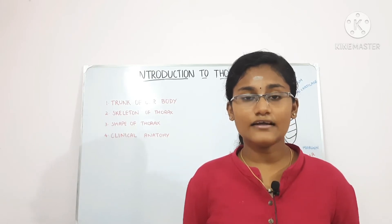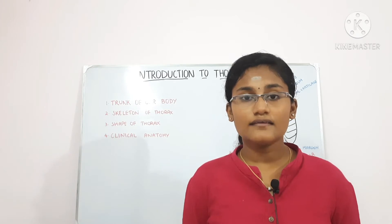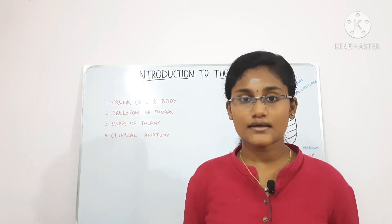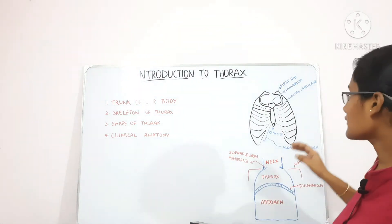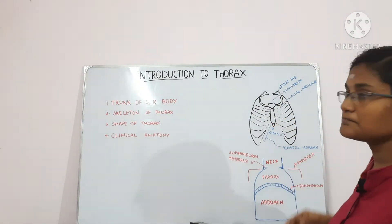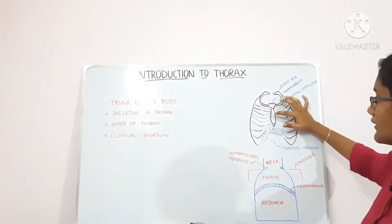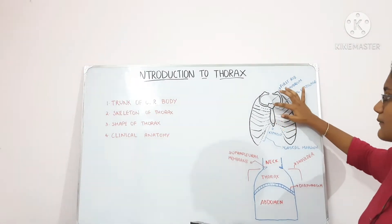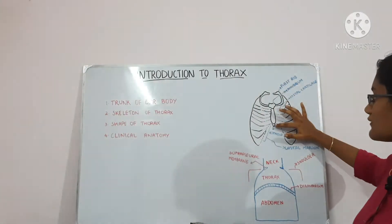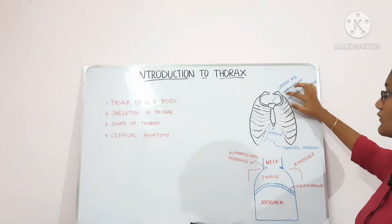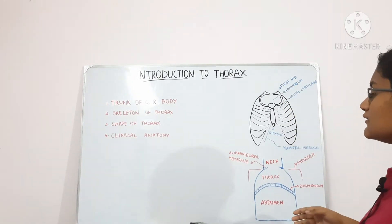The skeleton of the thorax is the thoracic cage. A part of it is shown here — the vertebral column is not shown but the ribs and the sternum are shown. This is the manubrium, which is also a part of the sternum. Between the manubrium and the sternum we have the manubriosternal joint, and this is the xiphoid process. This is the first rib, and likewise the other ribs are also present here.